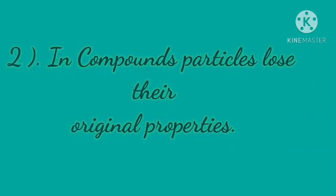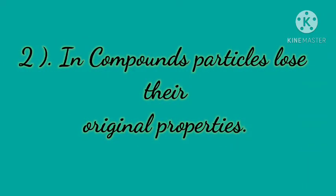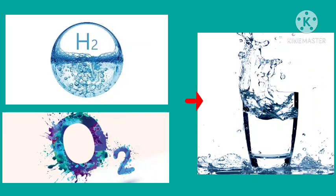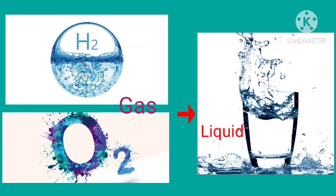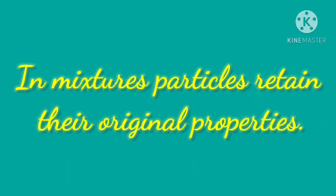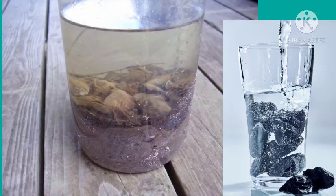Second, in a compound, particles lose their original properties. For example, hydrogen combines with oxygen to give water, and both hydrogen and oxygen are gases, whereas water is a liquid. In a mixture, particles retain their original properties. For example, if you add pebbles in water, both pebbles and water retain their original properties.